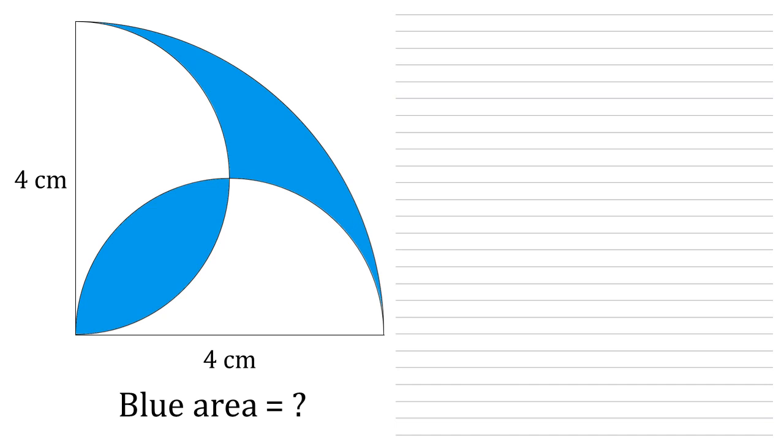We're given a quarter circle with radius four centimeters. Inside that circle are two semi-circles which are drawn on the two radii of our original quarter circle. This creates four separate areas. We need to work out what is the area of the blue area.